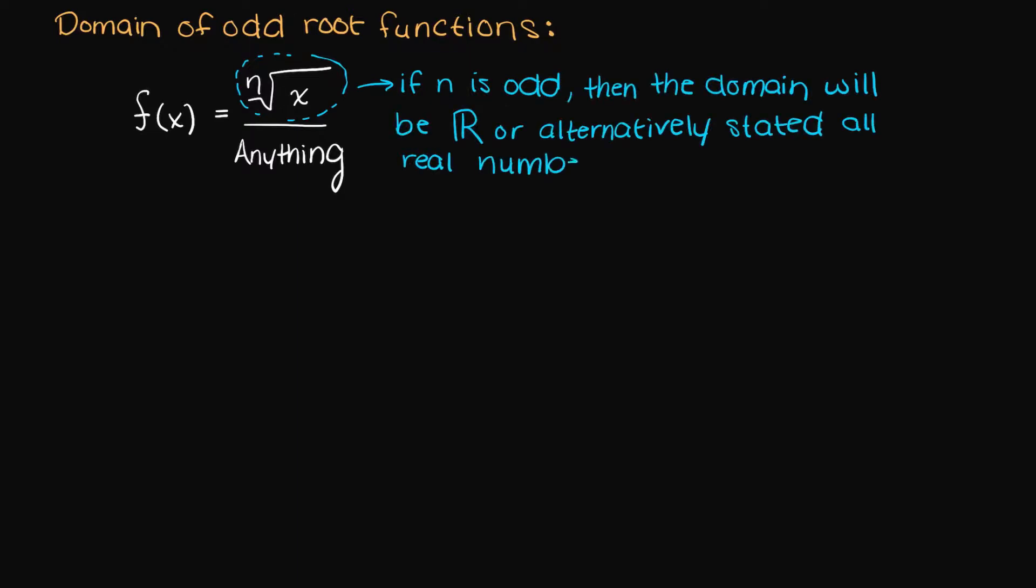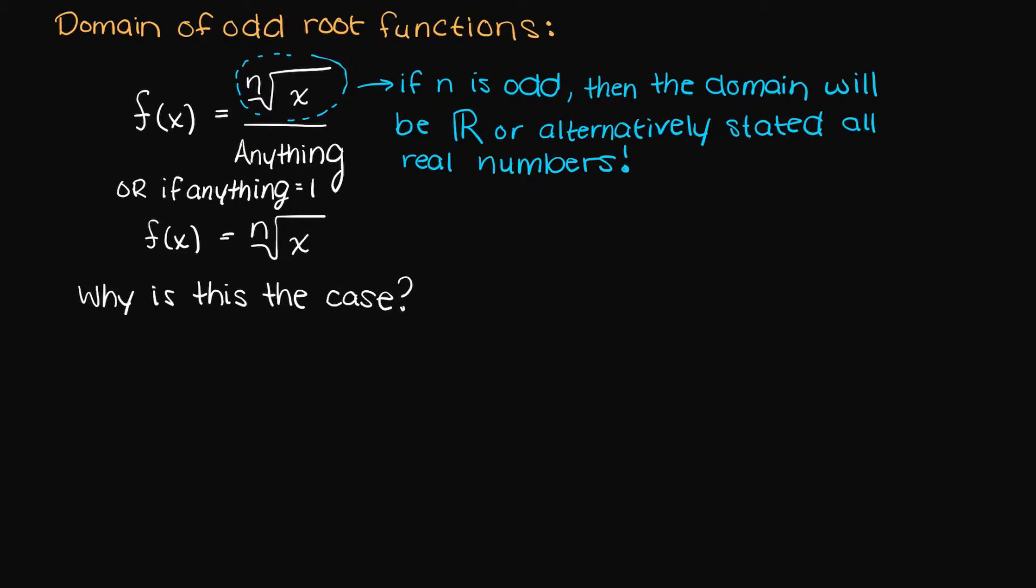So if you have an odd root term in our numerator, the reason it will never affect your domain is because we can simply factor out a minus 1 to the cubed root if we ever have a negative inside the odd root. This is because negative 1 to the exponent of any odd number will always be itself.